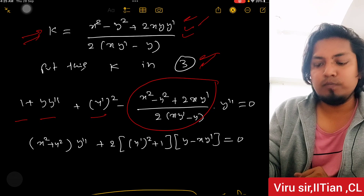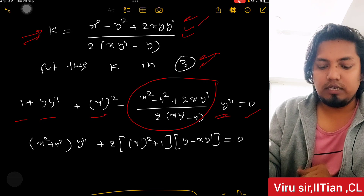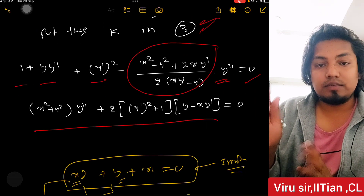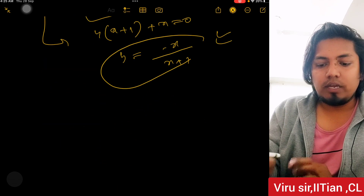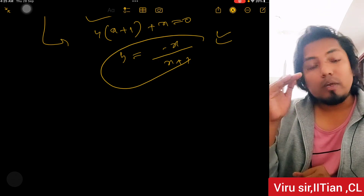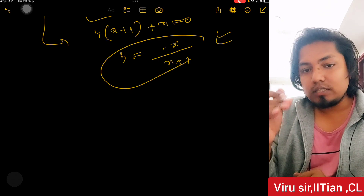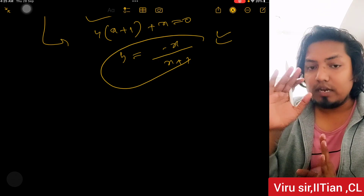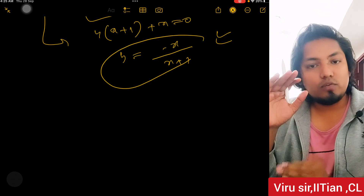The final result looks like: 1 + y·y'' + (y')² - k·y'' substituted gives the final differential equation after rearrangement. That's done. In the next lecture I will cover the next topic.